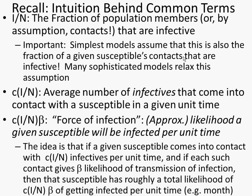Why do I say that's an approximation? Suppose I know I have exactly C times I/N contacts with infectives in a day, and my chance per contact is 0.01 — a 1% chance per contact — and I have 50 contacts per day. Is my chance exactly 50% that I'll get infected? Well, if I had 100 contacts with infectives per day at 1% per contact, would I have a probability of exactly 1? And if I had 200, would I have a probability of 2? Well, you can't have a probability of 2. That's a clear sign of a limitation in this reasoning.